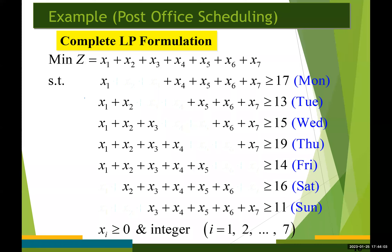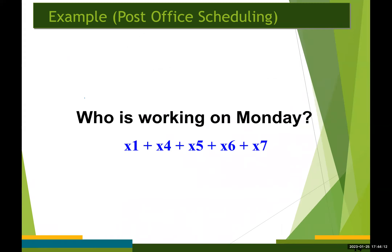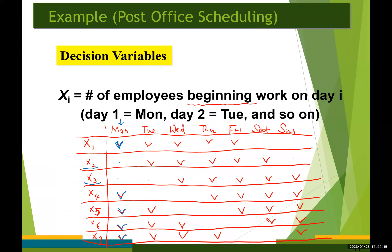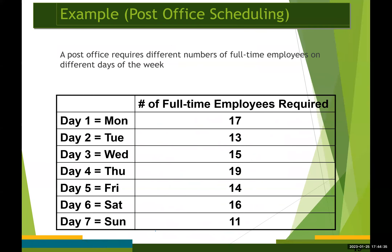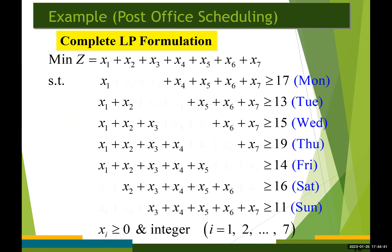For example, looking at the Tuesday constraint, the left-hand side is x1 + x2 + x5 + x6 + x7, coming from our schedule table. These are the total number of people working on Tuesday, and that number must be at least 13. That's why the Tuesday constraint is x1 + x2 + x5 + x6 + x7 ≥ 13.